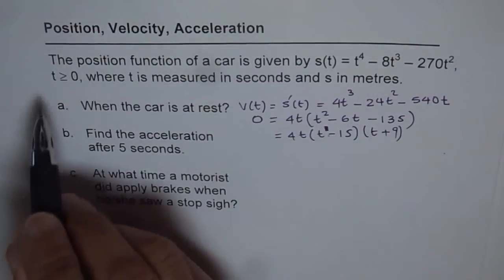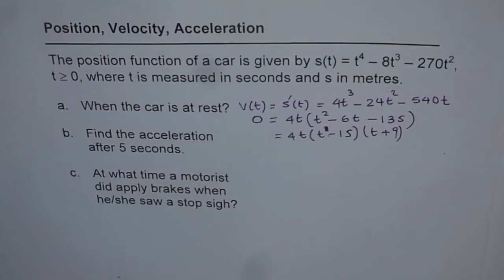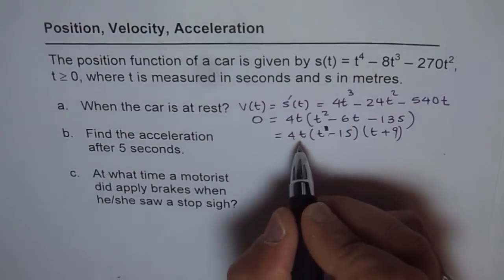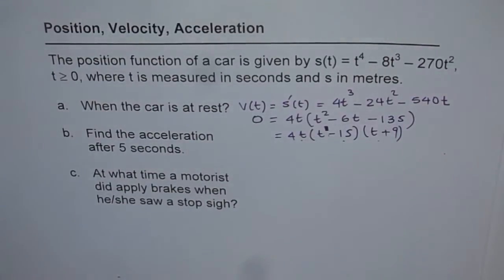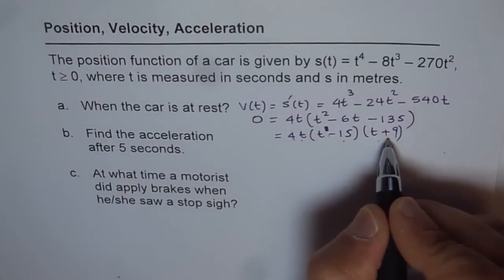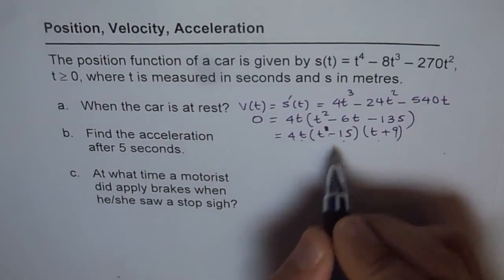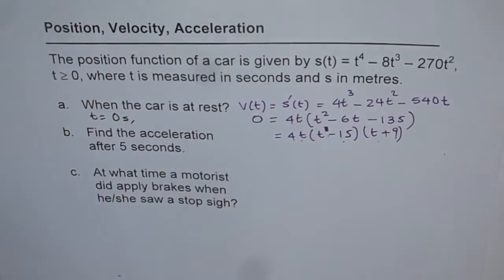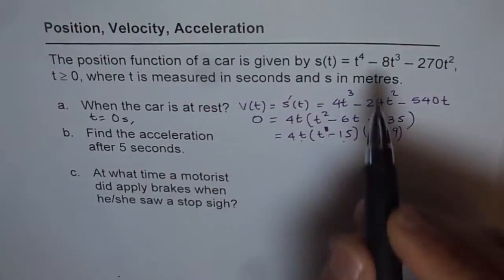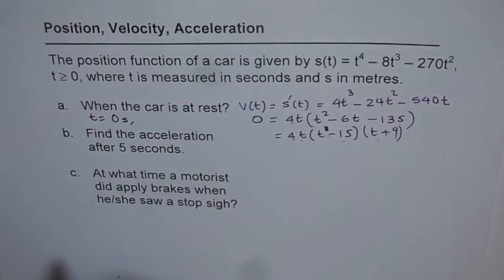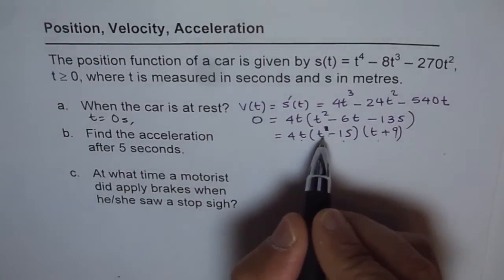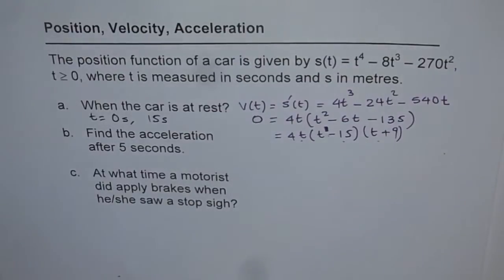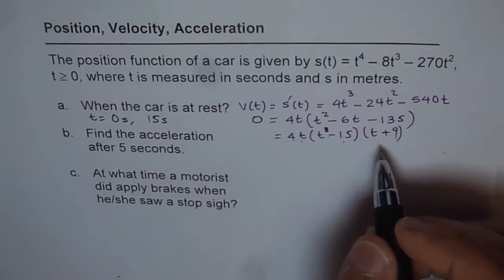Setting velocity to zero gives t = 0, t = 15, or t = -9. Since t ≥ 0, we reject t = -9. So the car is at rest at t = 0 seconds (the initial position) and at t = 15 seconds.